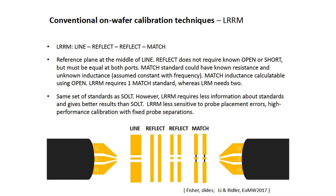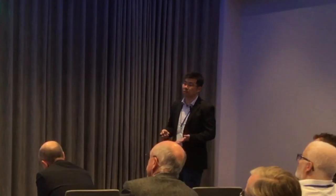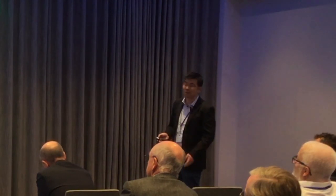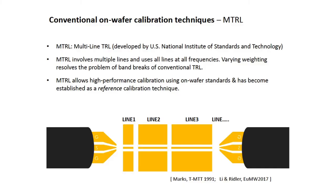LRRM requires the same set of standards as SOLT, but LRRM requires less information about the standards and gives better results. It is also less sensitive to probe placement errors, making it a very high-performance calibration technique suitable for fixed probe separation — ideal if you want to automate your calibration or measurements. The last technique is multi-line TRL, developed by the US National Institute of Standards and Technology, which we also consider to be the best calibration technique.